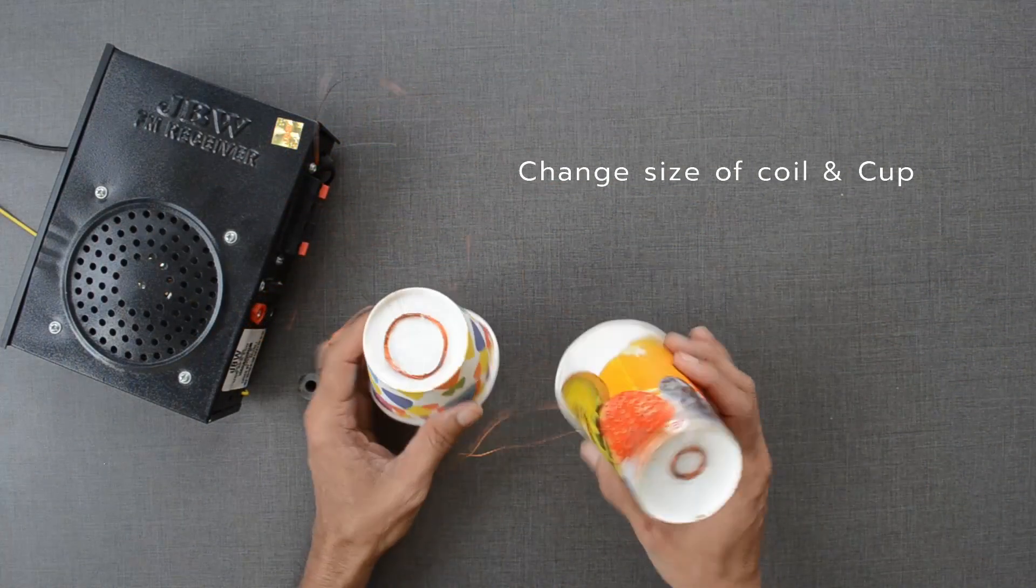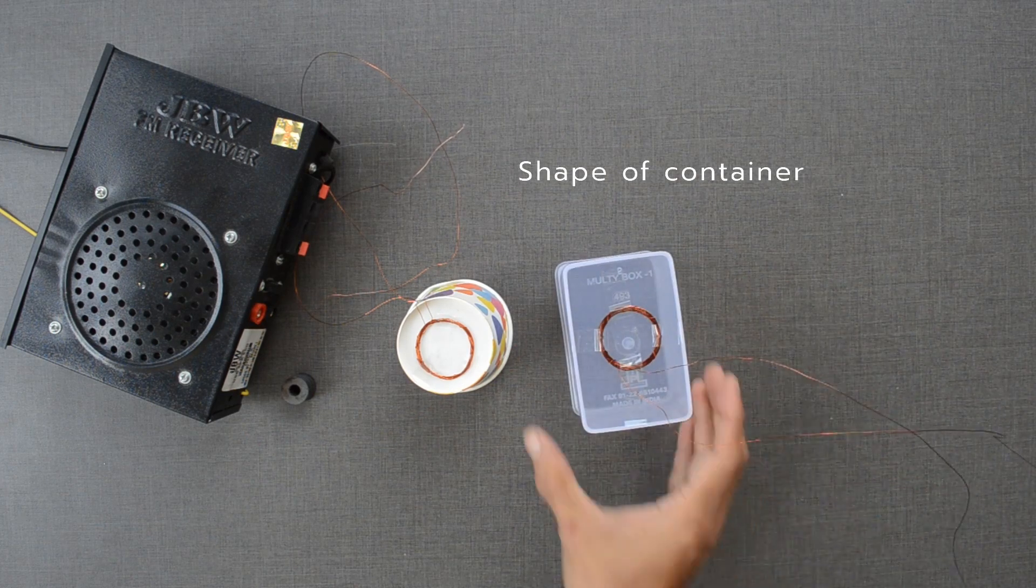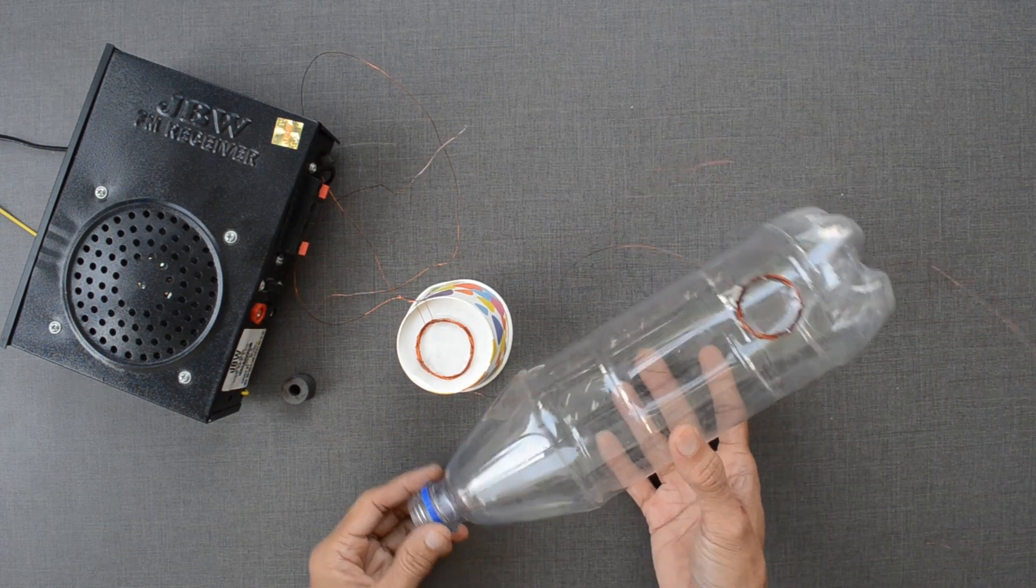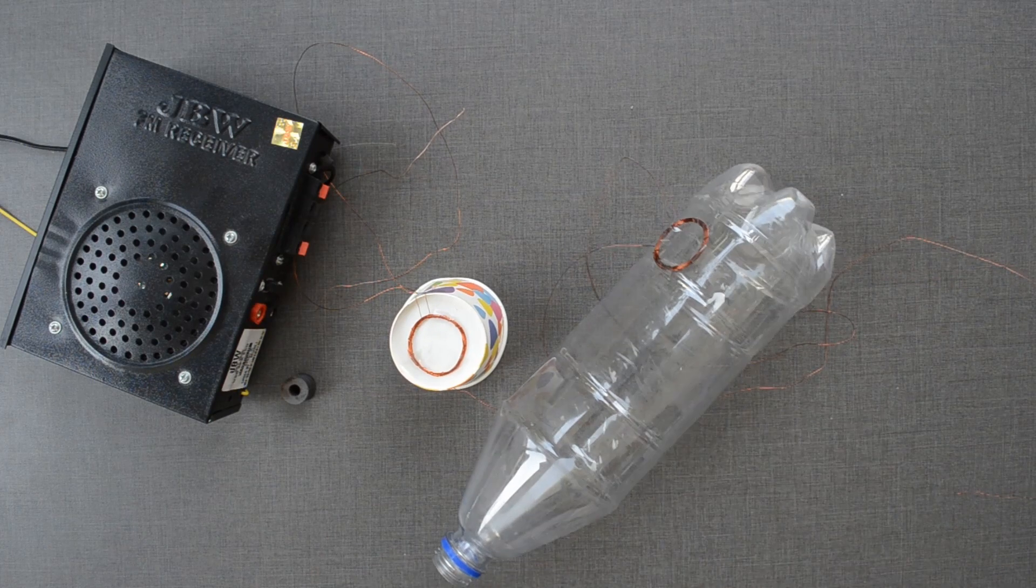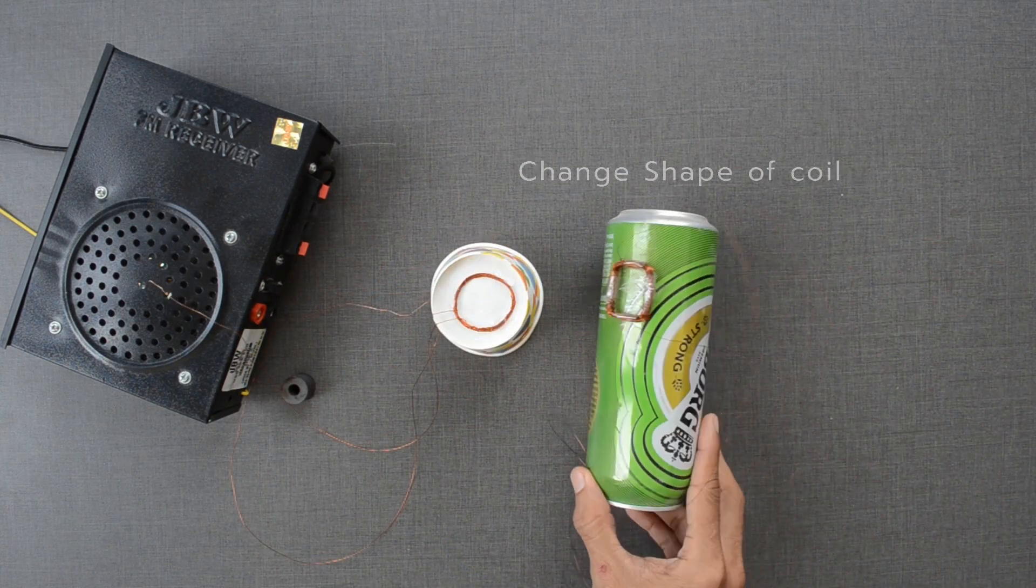Now that you know how to build a paper speaker, can you try different materials as well as different sources of sound? You can also try changing the number of turns, shape of the coil, as well as strength of the magnet.